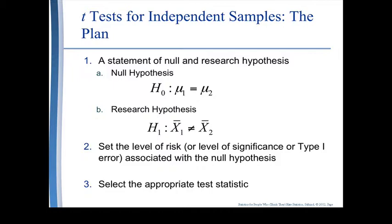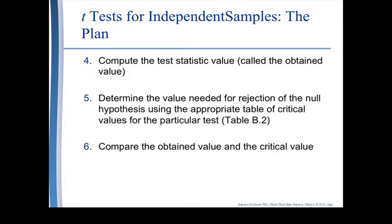Then you select the appropriate statistic by reviewing the decision-making tree, which we have already done. Since we are doing independent samples, we know we are going to be doing an independent samples t-test. Then we compute the statistic called the obtained value. Step 5: we determine the value needed to reject the null hypothesis by looking at the appropriate table of critical values — in this textbook, table B2. Step 6: we compare the obtained value and the critical value.